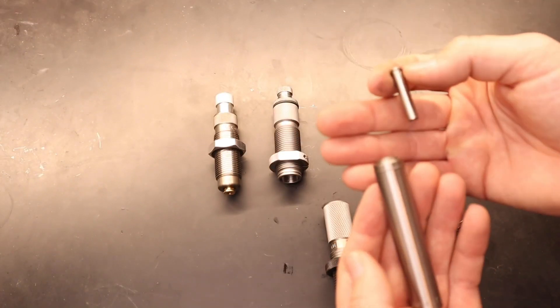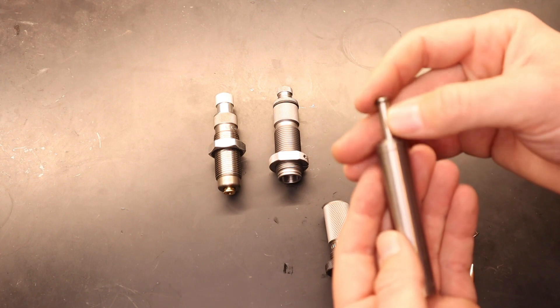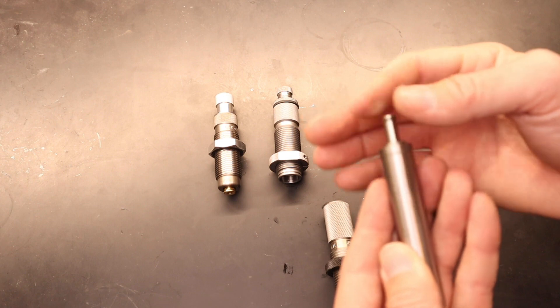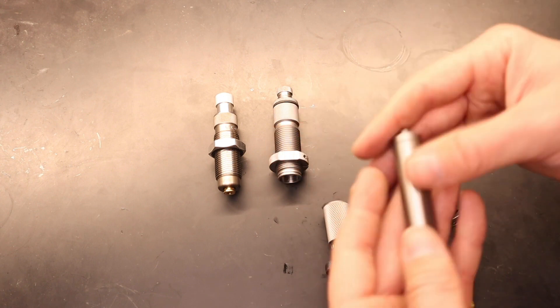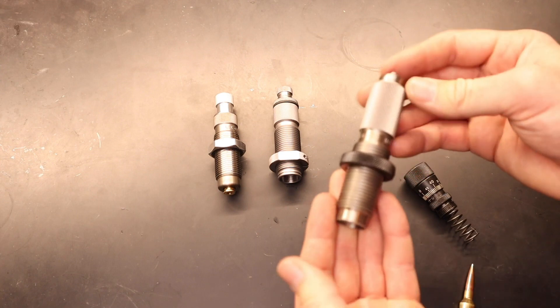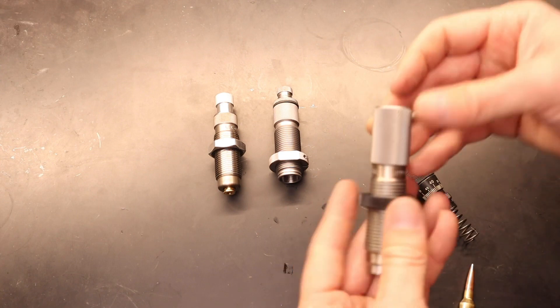Now one of the reasons these Redding dies are so expensive is because of the awesome machining and the really tight tolerances that they run on these. There is no wiggle room at all on the seating stem right here. And then as we drop it down into the body, this has a really awesome fit and finish as well. It glides super smooth.